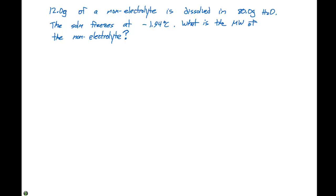For this particular problem, we're talking about freezing point depression. So we're going to use delta TF equals KF times M. And KF is going to be equal to 1.86 degrees Celsius per molal.